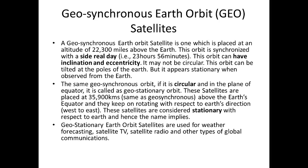If the geosynchronous orbit is circular and in the plane of the equator, it is called a geostationary orbit. These satellites are placed at 35,900 kilometers above Earth's equator and rotate in the same direction as Earth — west to east — and are thus considered stationary with respect to Earth. Geostationary earth orbit satellites are used for weather forecasting, satellite TV, satellite radio, and other global communications.